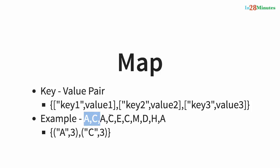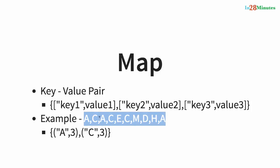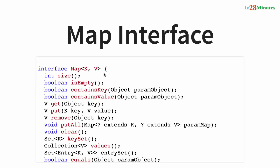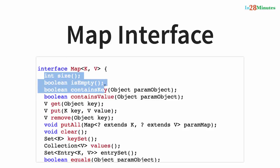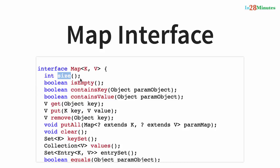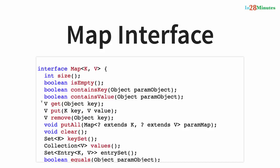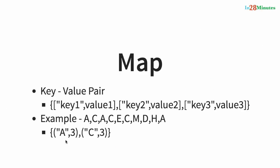For example, I want to store how many times a character is present: 'a' is present 3 times, 'c' is present 3 times — that's where I'd use a map. The typical methods in the map interface are related to keys and values: size(), isEmpty(), put(key, value) to insert, and get(key) to retrieve. So I can put 'a' with value 3 and then get the value for 'a' to get 3 back.